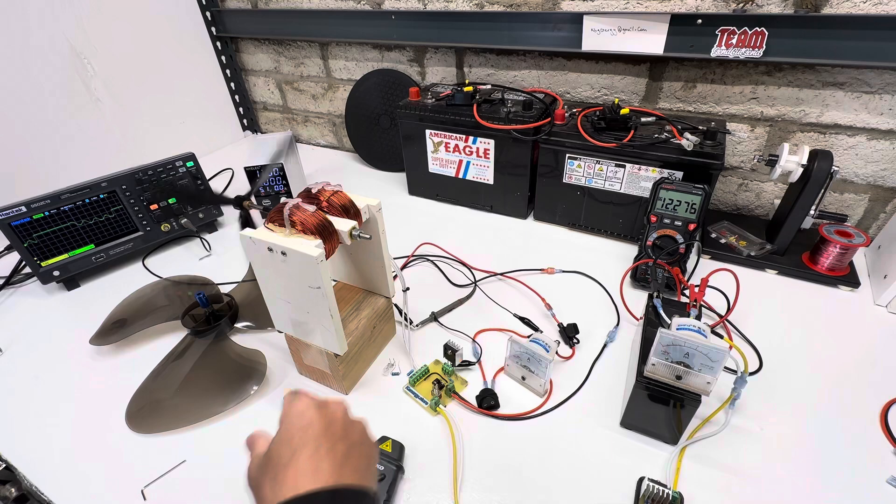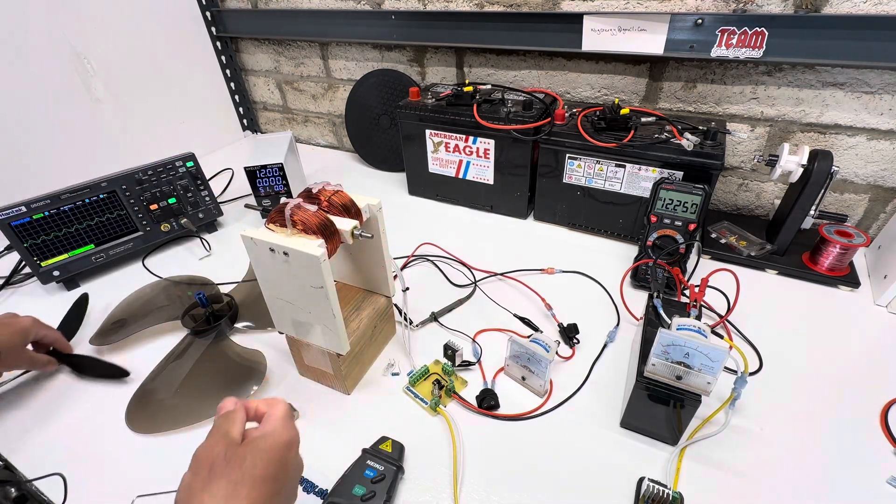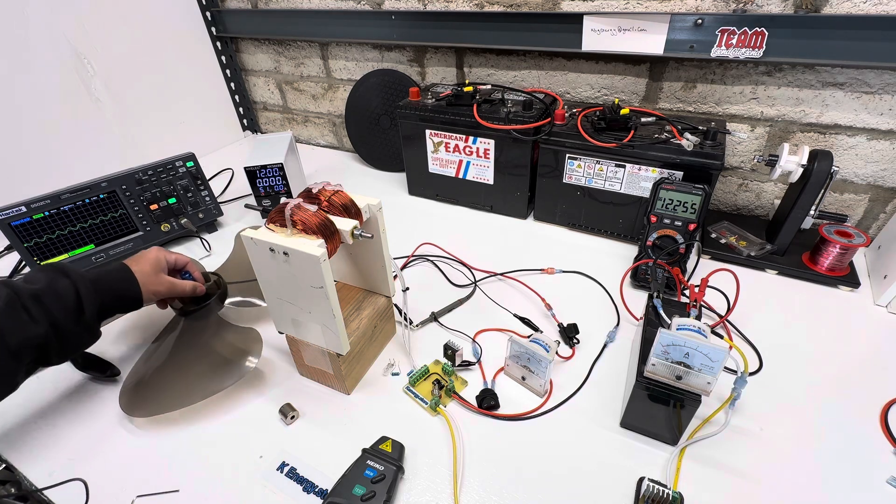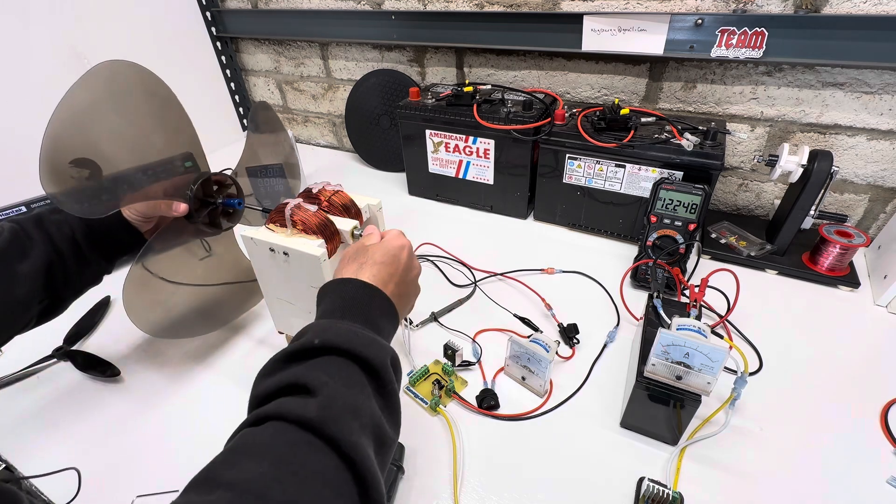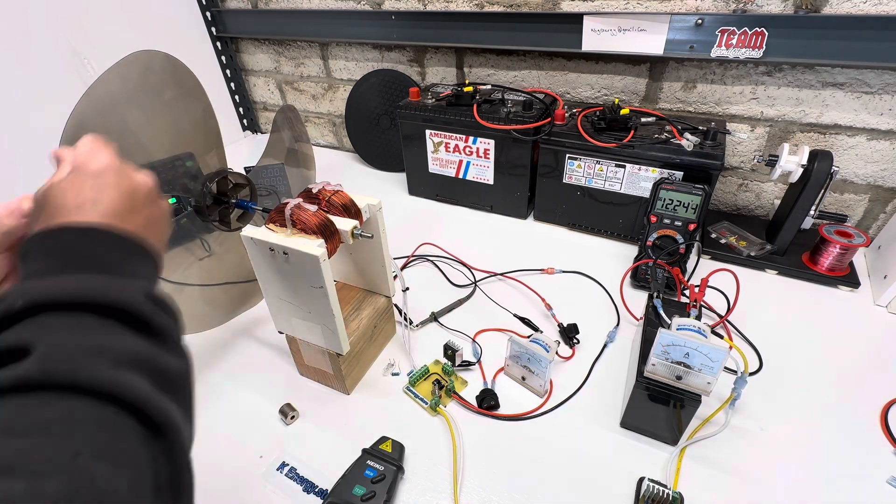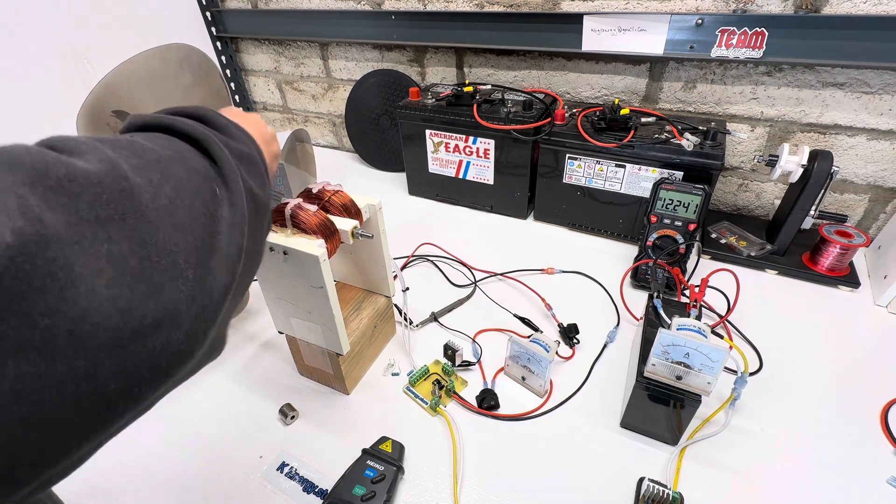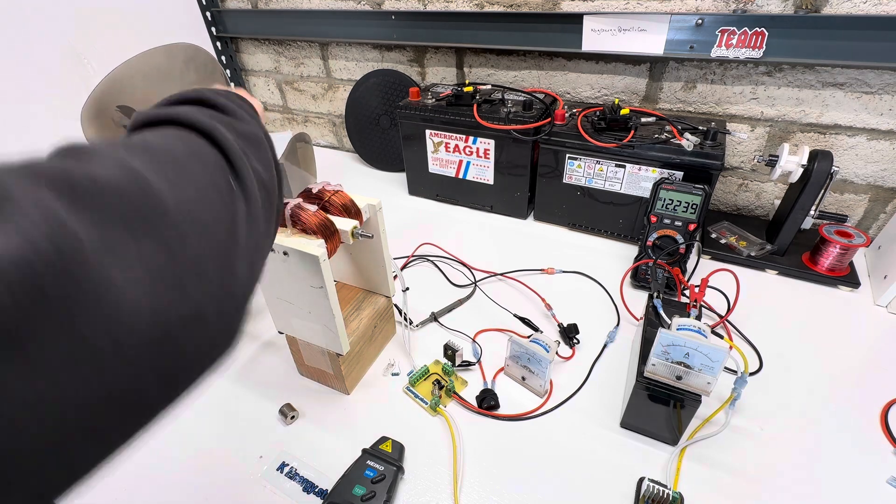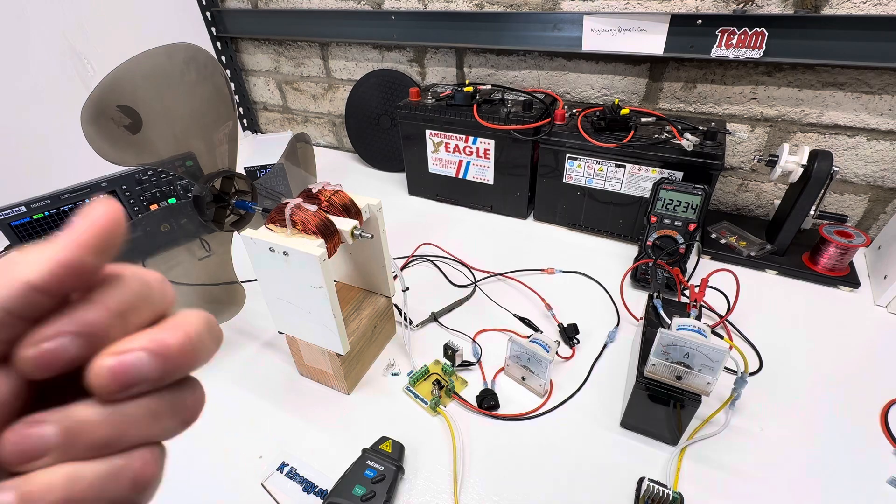We're going up in load. We started with no load running the fastest and least amount of energy return, then the medium prop which had pretty good return and a little bit slower. Now we're going to put this big fan on here, the 16 inch fan, and see how this does. Remember it's just this little tiny magnet.